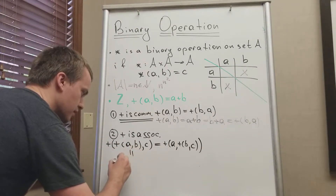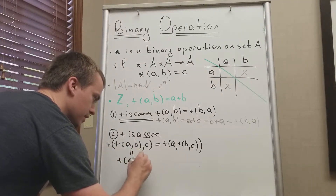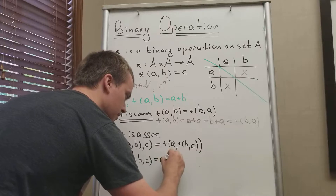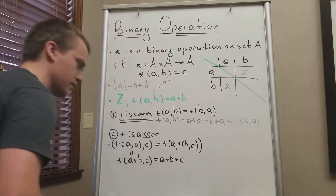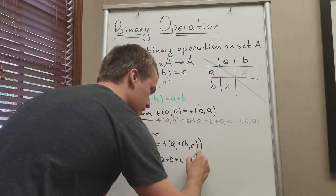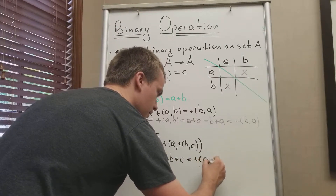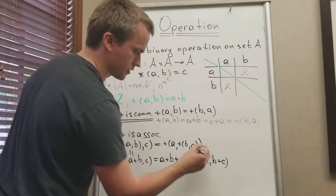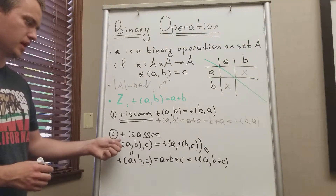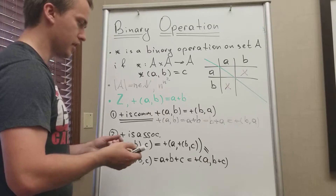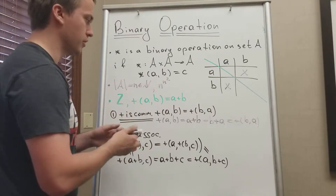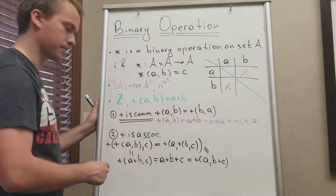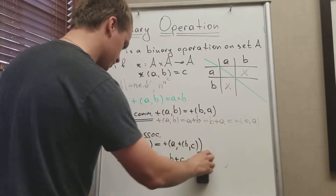This is true because the operation of (A*B) and C is just (A plus B) plus C, which equals A plus B plus C. From the other side, the operation of A and (B*C) equals A plus (B plus C), which is the same value. So the operation is associative — it doesn't matter in which direction you add your elements, whether you add A and B first and then C, or B and C first and then A.